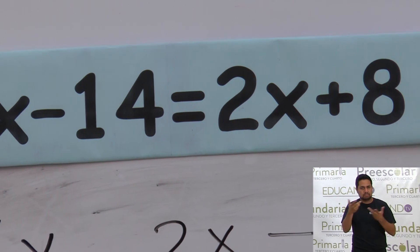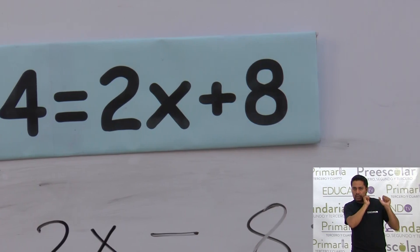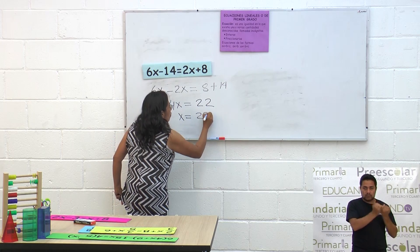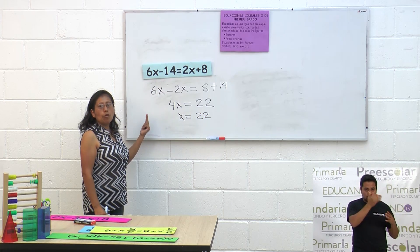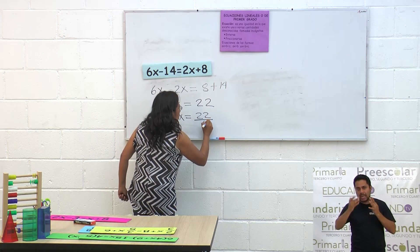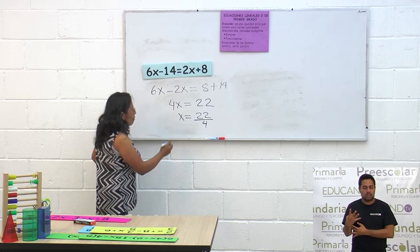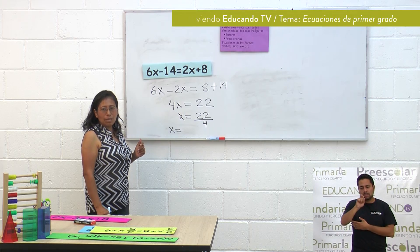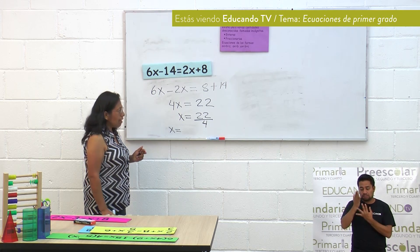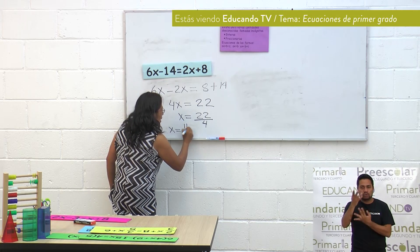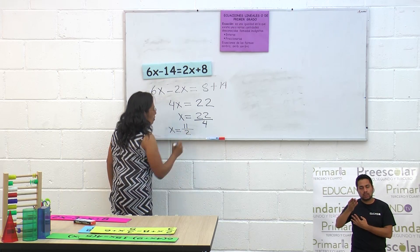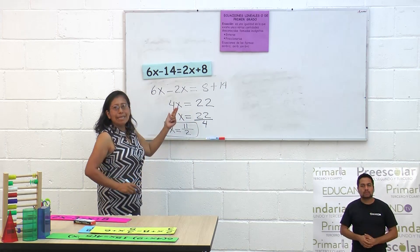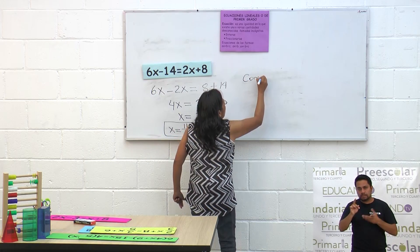Ahora vamos a despejar la x — dejar solita la x para encontrarle su valor. Queda como x igual a 22; el 4 está multiplicando, ¿cómo va a pasar? Dividiendo. Entonces x igual a 22 cuartos. Aquí le vamos a buscar su mitad: ¿22 tiene mitad? Sí. ¿4 tiene mitad? Sí. La mitad de 22 es 11, y la mitad de 4 es 2. Queda 11 medios. Este es el valor de x.